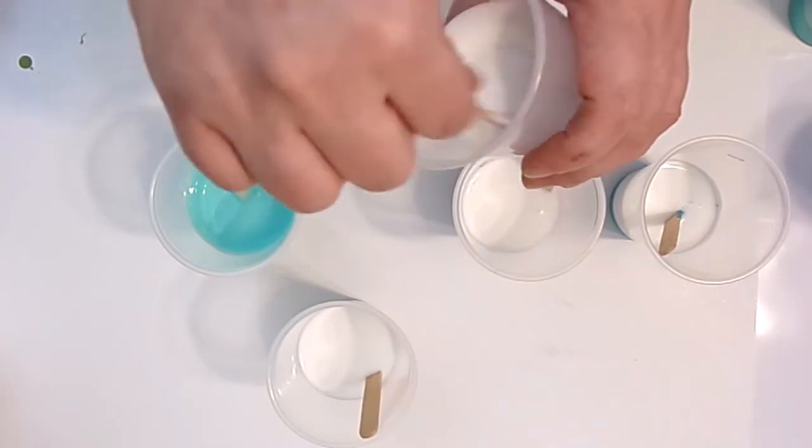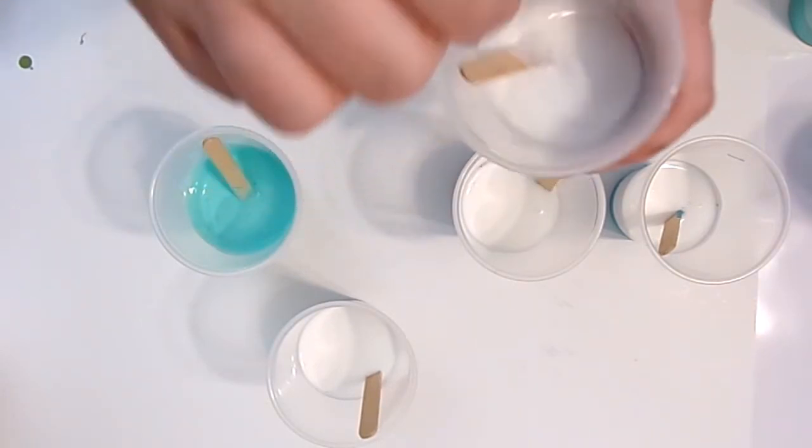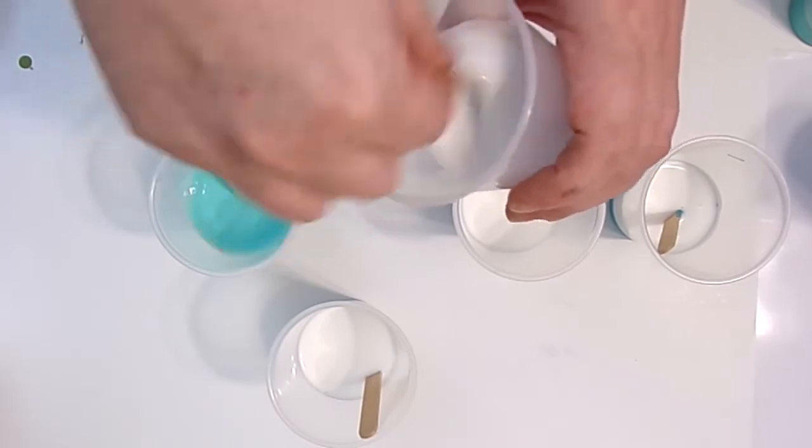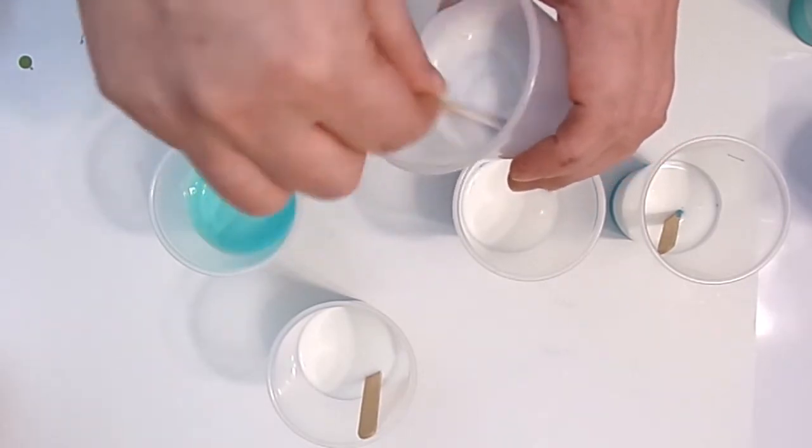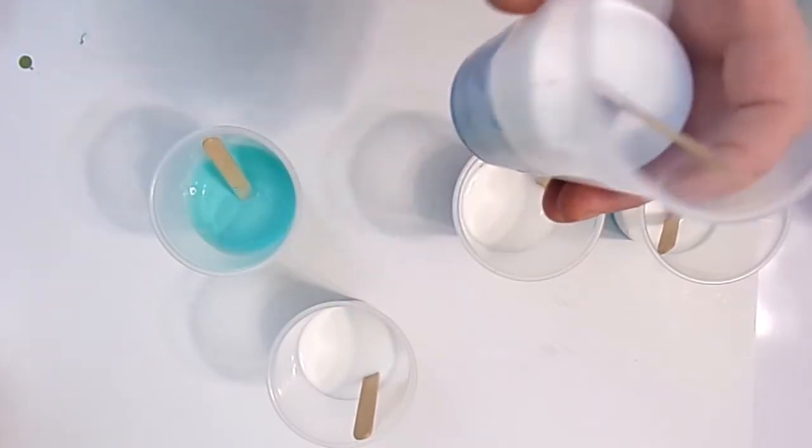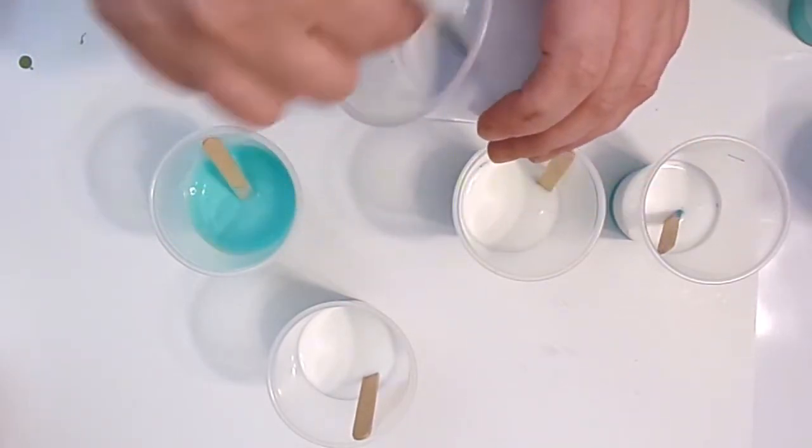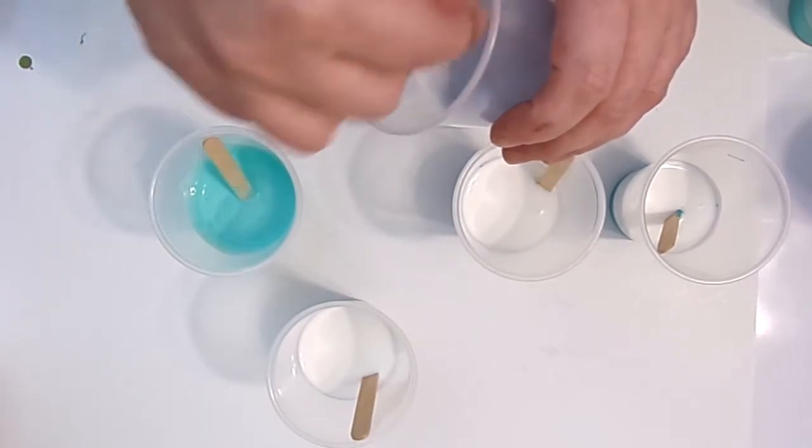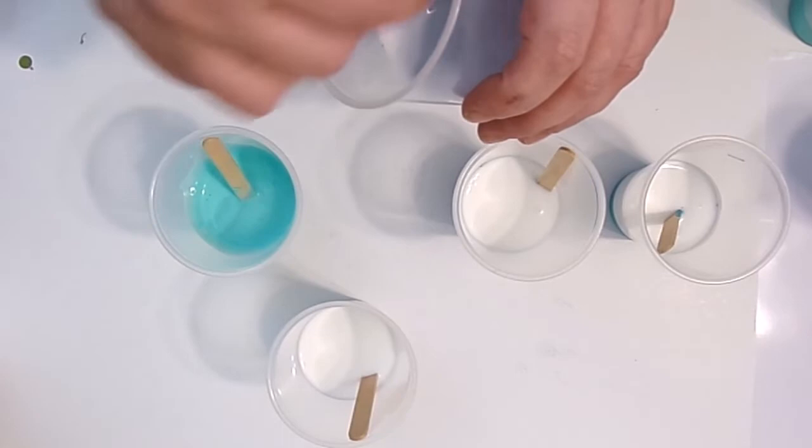And one way to save on the budget and the environment is, excuse me, go ahead and reuse these cups. You can let the paint, make sure it's just you've poured all the paint out and it's just what little bits are left in there, and then you can let it dry, let it completely dry.